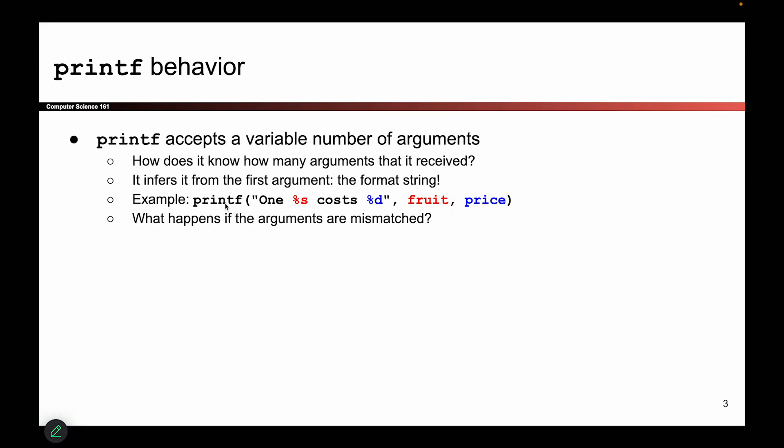In this example, the printf call says I want to print the string 'one something costs something'. Because of these percent symbols, I am telling the C program that there are two placeholders that I want to print out, but I don't know what their values are when I wrote this piece of code. The user can specify what they are and what should go in those placeholders by providing additional arguments to printf.